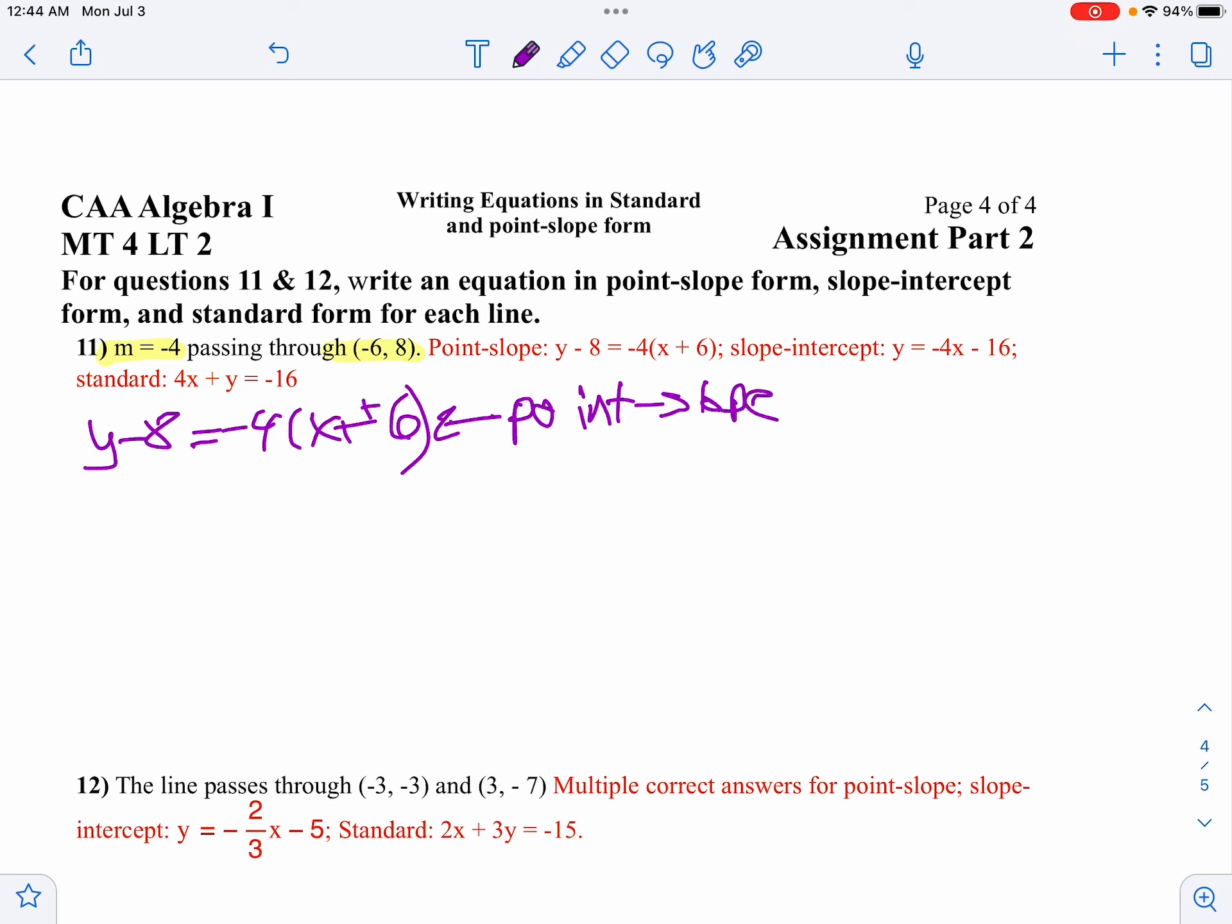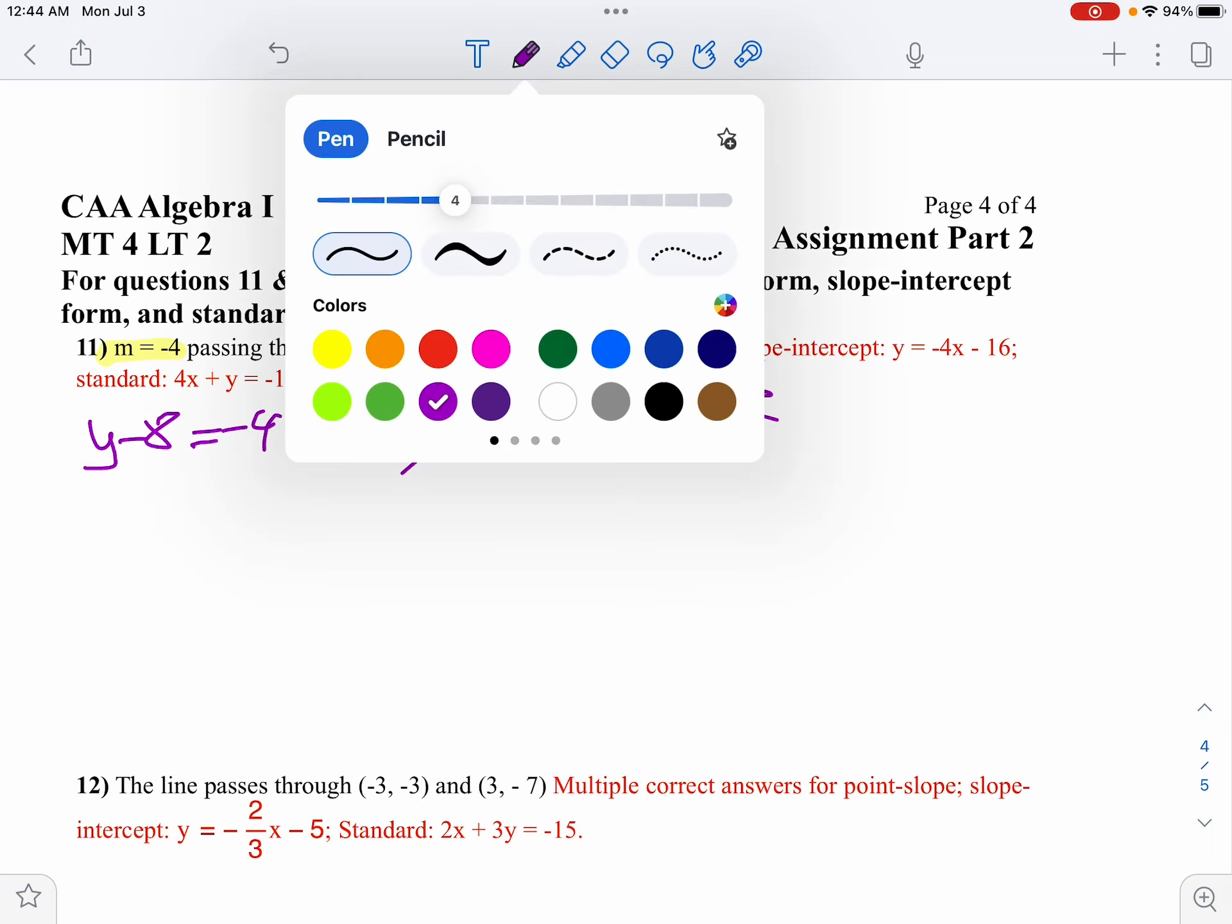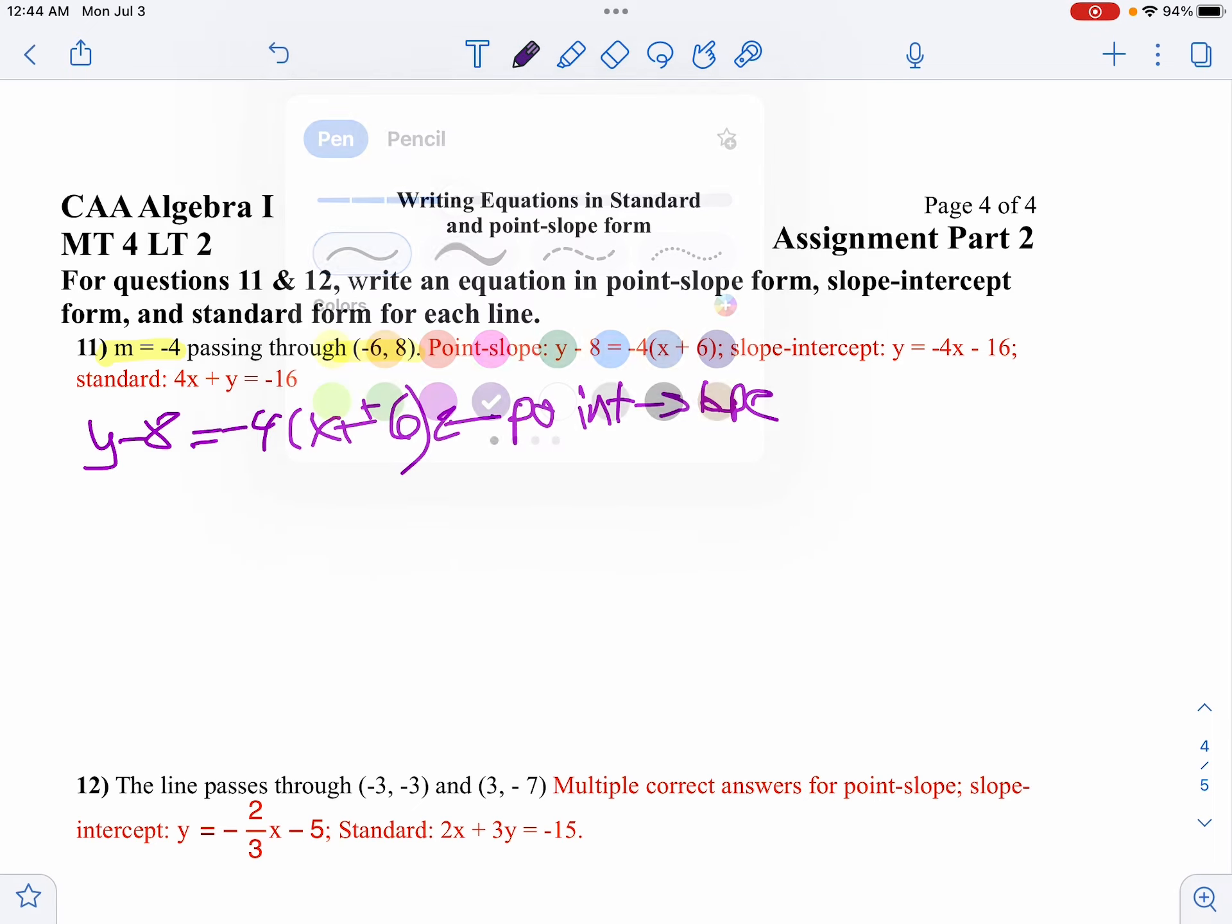And then I think what I'll do is I'll just convert that to slope-intercept form by distributing my negative 4 inside. So if we distribute our negative 4 inside, we get y minus 8 equals negative 4x minus 24. And then add 8 to both sides, and we'll get y equals negative 4x. And then negative 24 plus 8 is negative 16.